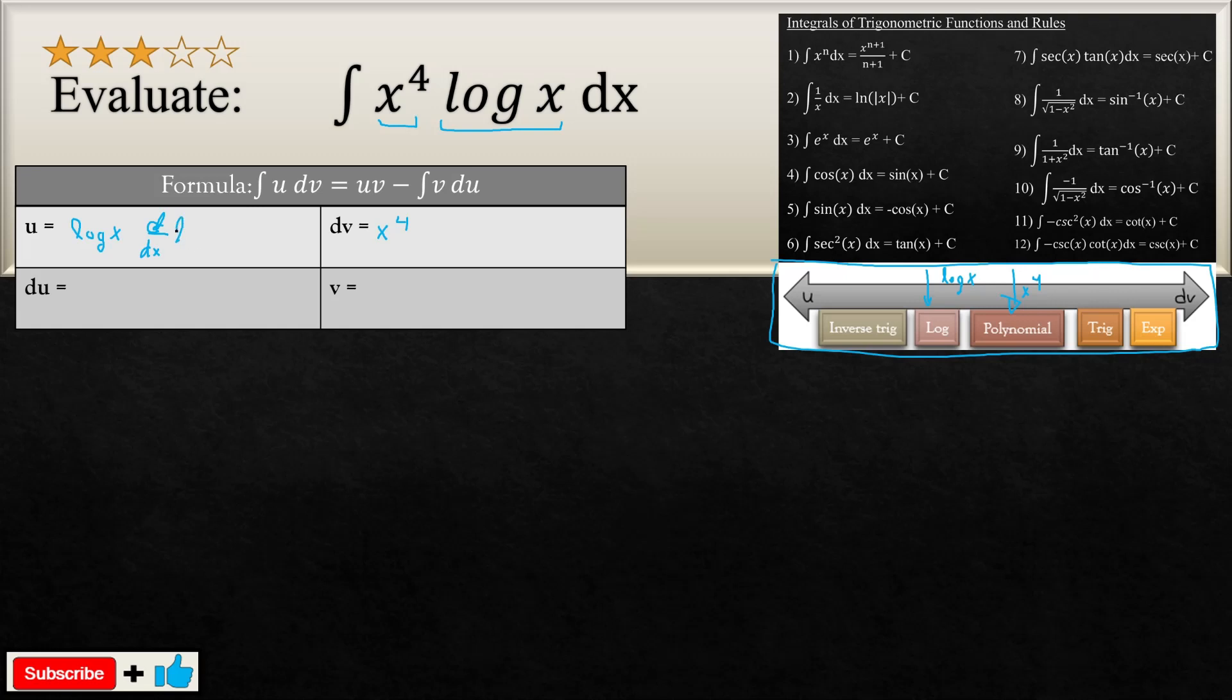The derivative of a log base B of the function of X will equal to the derivative of that said function divided by the function itself with ln of B. Now, the B is representing the base of the log. In most scenarios, you take the base, if you don't write it explicitly like in this example, you take it as 10. So really, this is written with 10 over here.